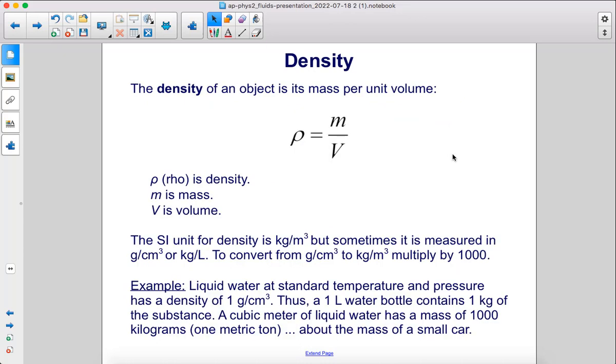The density of an object is its mass per unit volume. The symbol for density is rho, a Greek symbol that looks like a P. M is mass, capital V is volume. The SI unit for density is kilograms per cubic meter, but sometimes it's measured in grams per cubic centimeter or kilograms per liter. To convert from grams per cubic centimeter to kilograms per cubic meter, you just multiply by a thousand.